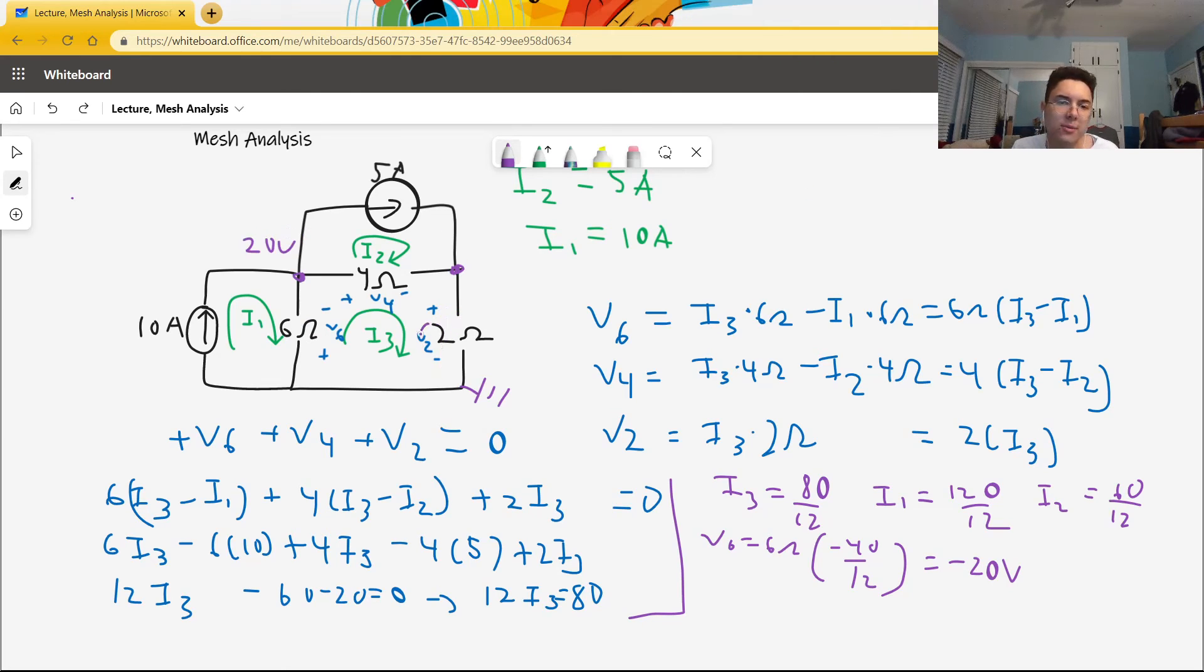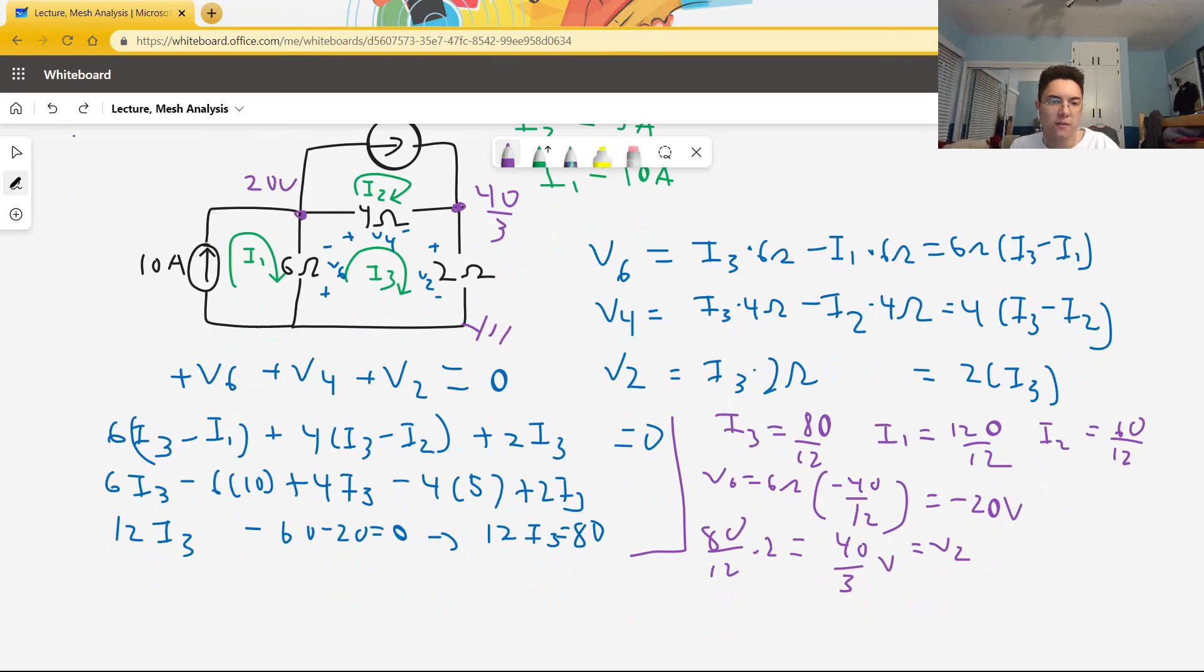Let's determine the voltage rise across V2. I mean, V2 is going to be a voltage drop, but we see that whatever V2 is, we're going to rise by that amount. V2 is I3 times 2 ohms. That's 80 over 12 times 2, which is 40 over 3 volts. That's equal to V2. Now the moment of truth. Is V4 going to rise by 20 over 3, which would make this 60 over 3, which would be 20? V4 equals 4 times (I3 minus I2). 80 minus 60 is 20 over 12. 4 and 12 cancel out to be 20 over 3 volts. If you add 20 over 3 volts to 40 over 3, you get 60 over 3, which is 20. So we solved this circuit correctly.